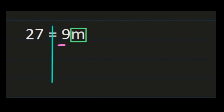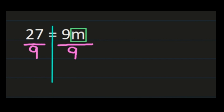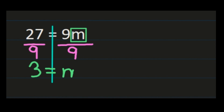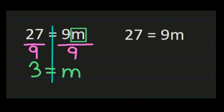We have 9 times m. To get m by itself, we do the inverse operation, which is to divide, and we show division using the fraction line. We divide by 9 because that's what m was multiplied by, and we divide both sides by 9. On the left, 27 divided by 9 equals 3. On the right, 9 divided by 9 is 1, and 1 times m is simply m. So we get 3 equals m.